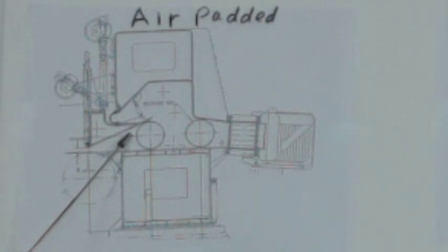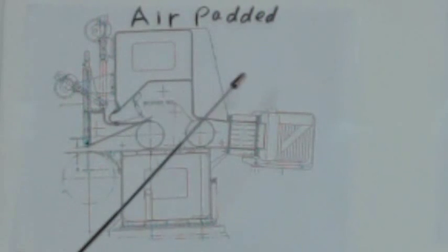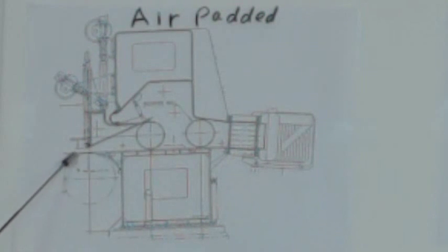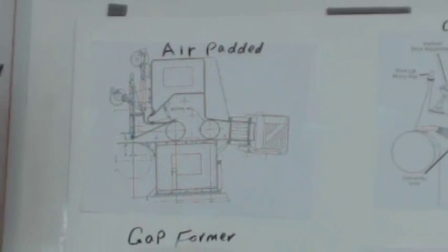It is what we call the air padded head box, the manifold header, distributor tubes which I'm going to talk about in the next videos, rectifier rolls. You can have one or two or three or even multiple, five of them and of course a slice after that where the jet emerges out of the slice.